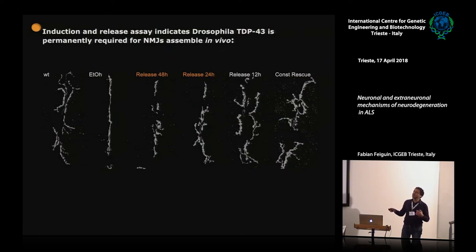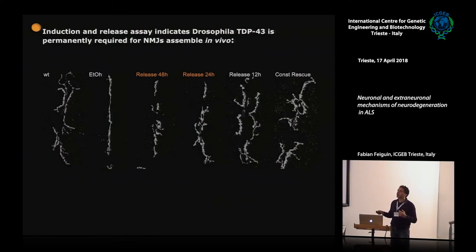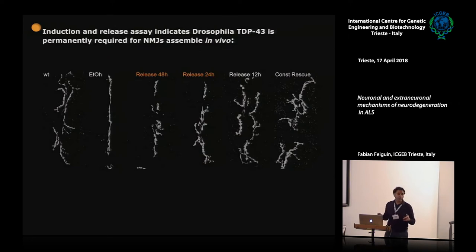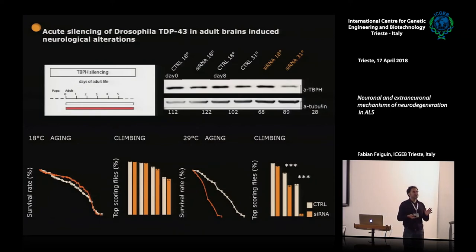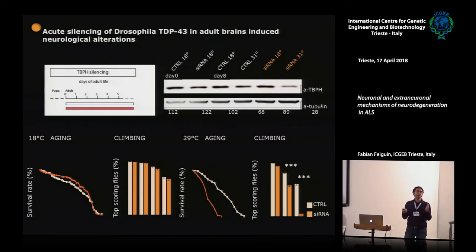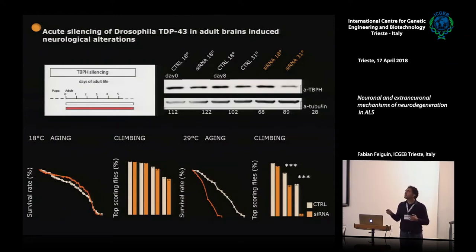The protein is permanently required to avoid motility problems and to avoid innervation defects. If you release for 12 hours it is okay — like not releasing at all. But if you release expression for 24 or 48 hours, you see loss of innervation. What happens if we silence the protein in adult flies at any time point? We used an egalitarian GAL4 that is temperature sensitive — it has a repressor that is deactivated by temperature.